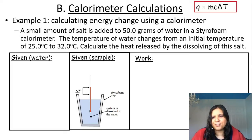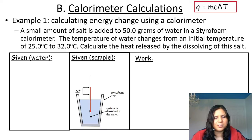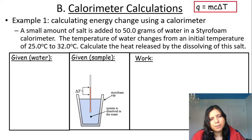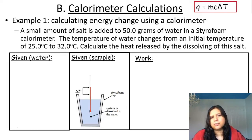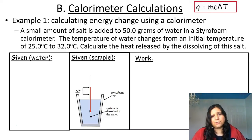Here's our first calculation — calculating energy using a calorimeter. A small amount of salt is added to 50 grams of water in a styrofoam calorimeter. The temperature of the water changes from an initial temperature of 25.0 degrees Celsius to 32.0 degrees Celsius. Calculate the heat released by the dissolving of this salt. We're going to split it up into information given for the water and information given for the sample.